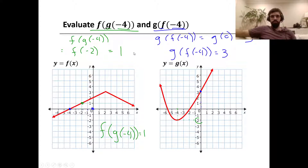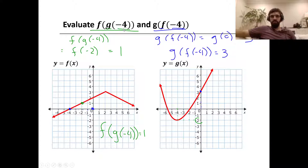Given these two graphs — graph f of x and graph g of x — we can find f of g of negative 4 and g of f of negative 4, and those are going to reveal two different answers. For f of g of negative 4, negative 4 is our input for g, and the output g of negative 4 becomes our input for f.